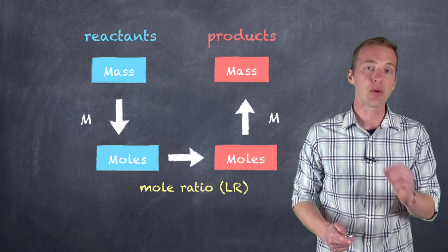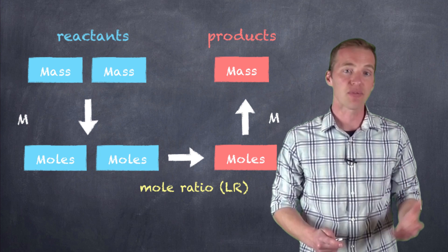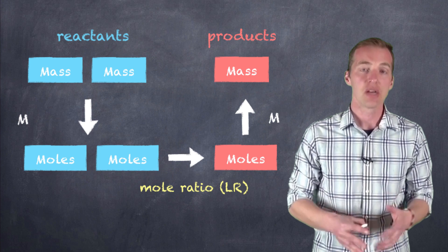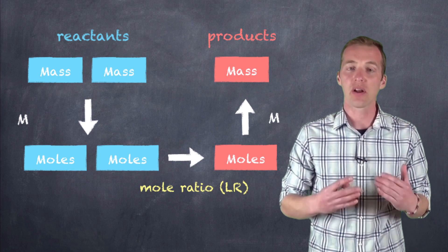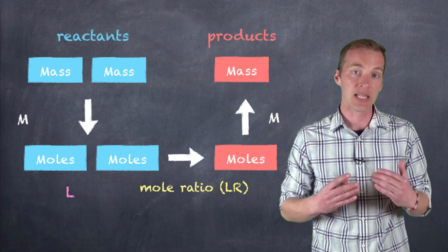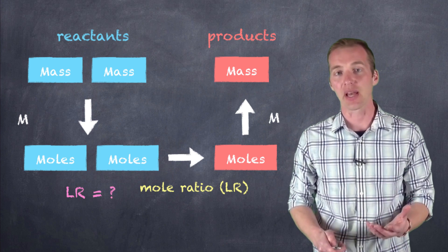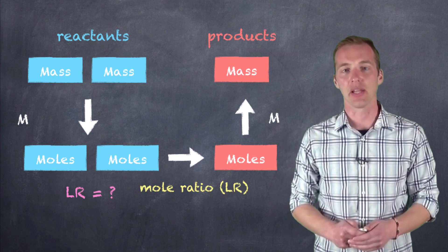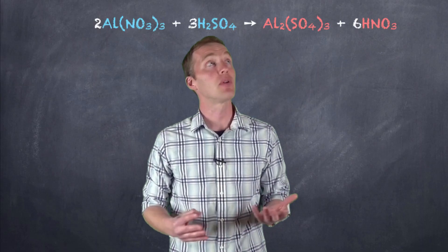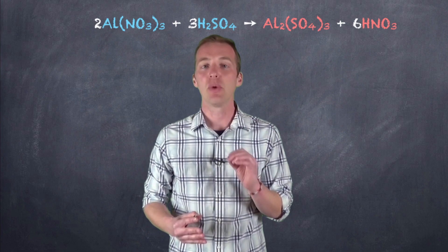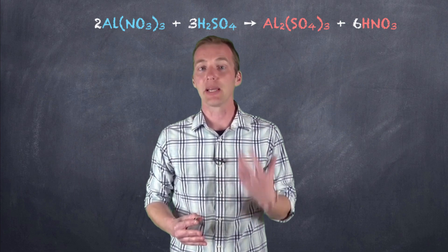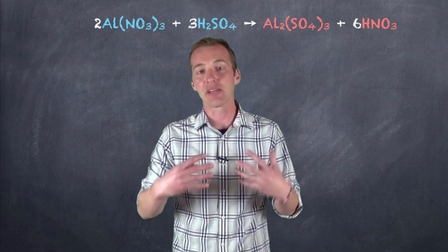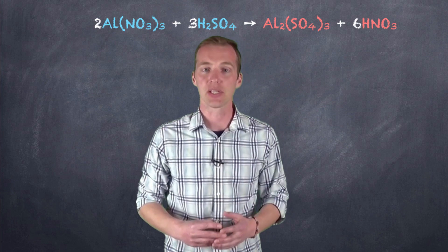Now with limiting reagents, we're adding one more layer to our first calculation, because we have two masses of reactants. What we have to do is establish which one of those two is going to be the limiting reagent, or limiting reactant, in our process — and that is the molar value we're then going to use to complete our calculation. So let's take a look at a sample chemical reaction, a balanced chemical equation, that we can evaluate using limiting reagent calculations, and see what the different layers and processes are to approach a question like this.